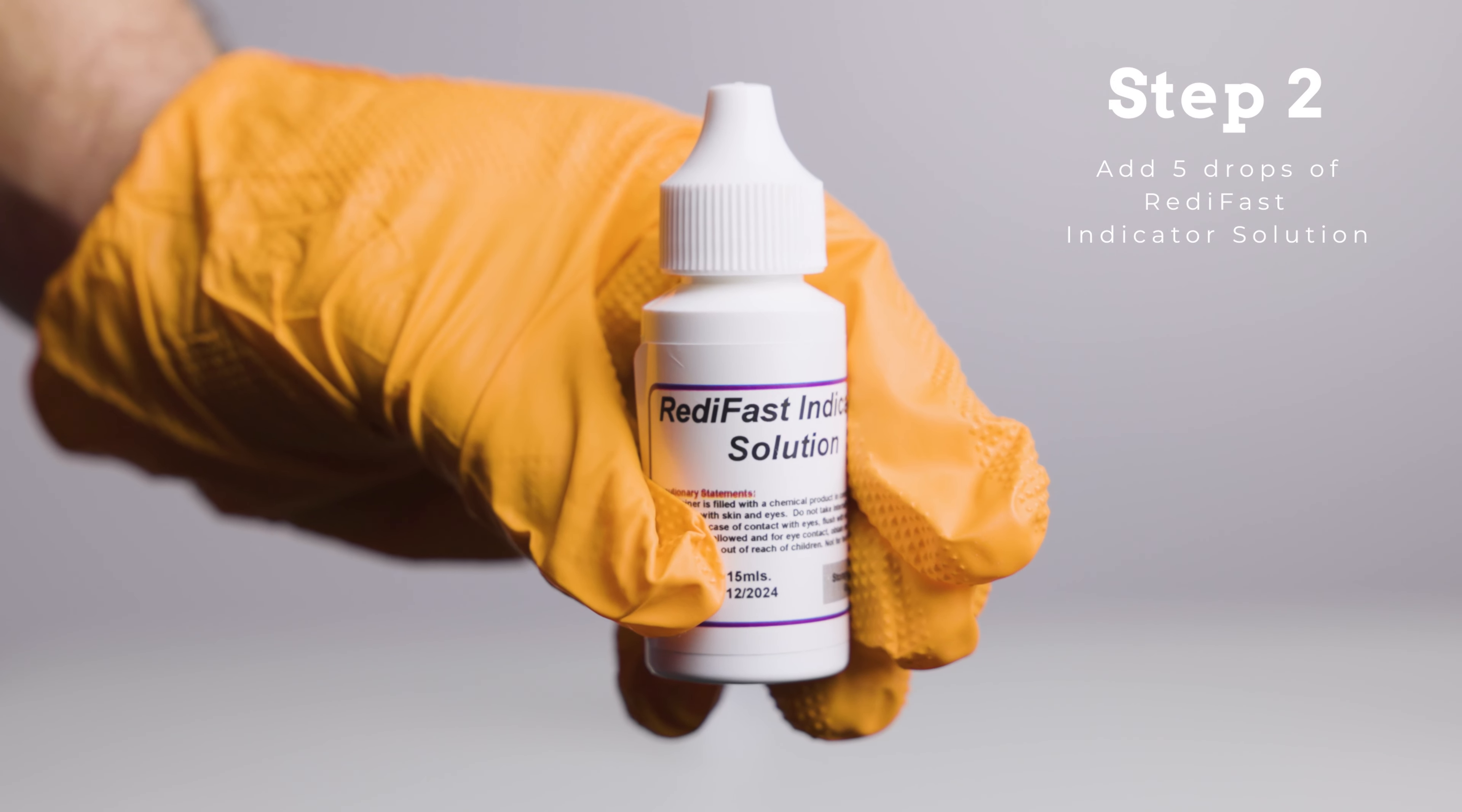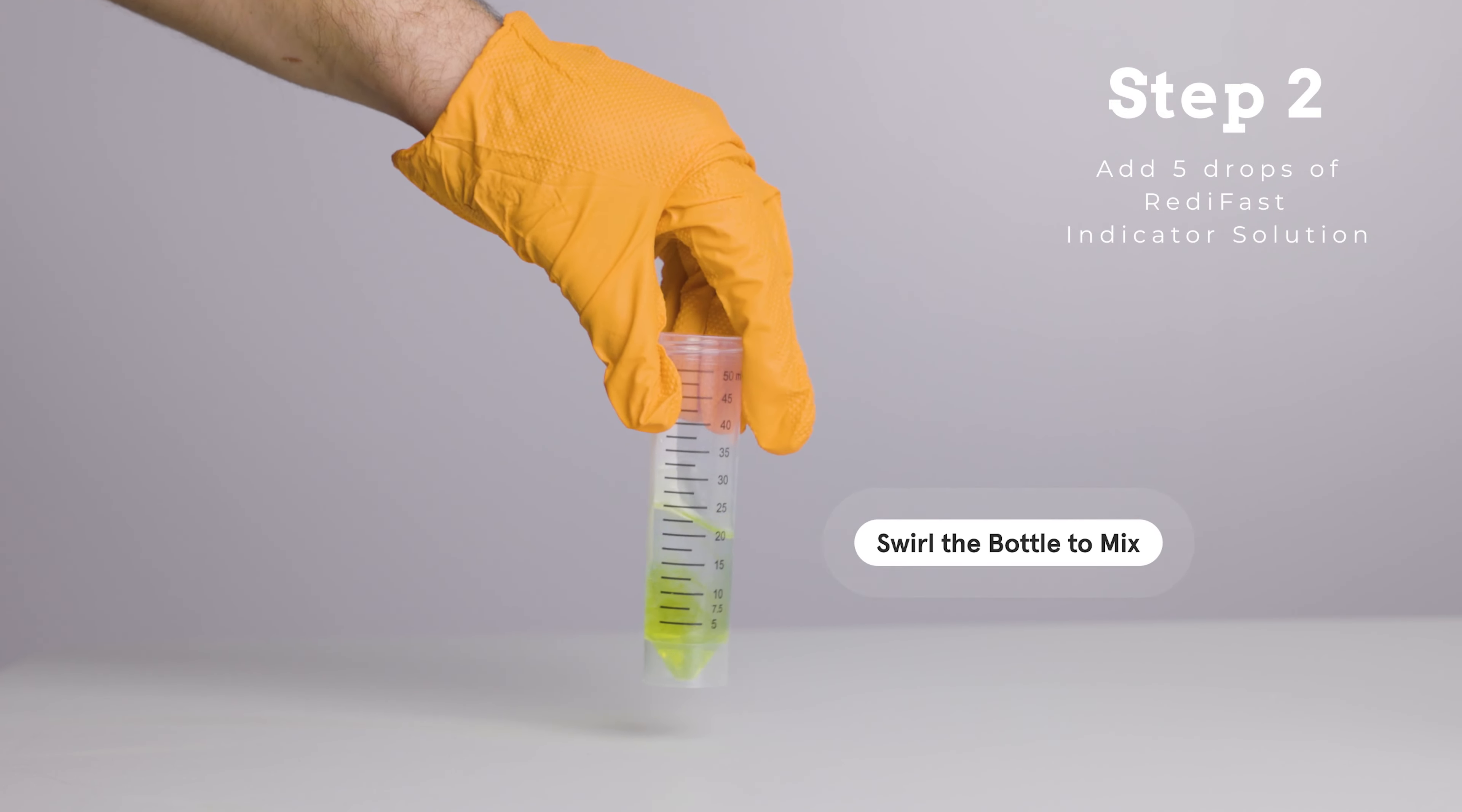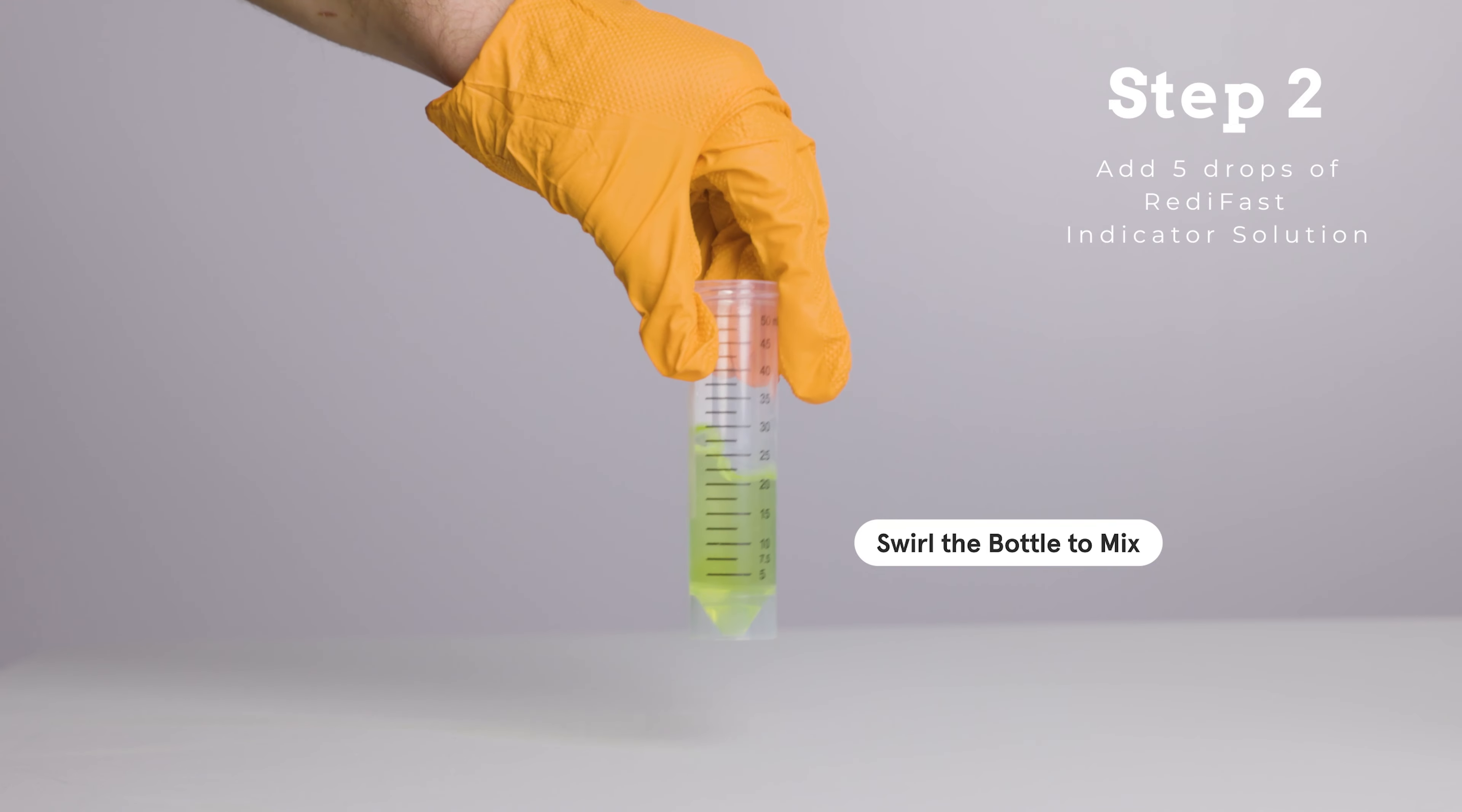Step 2. Add 5 drops of Ready Fast Indicator Solution, then swirl the test bottle to mix. The sample should now be lime green in color.